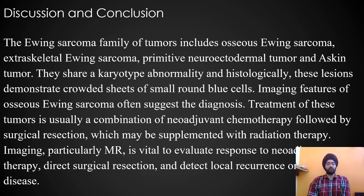In discussion and conclusion, the Ewing sarcoma family of tumors includes osseous Ewing sarcoma, extra-skeletal Ewing sarcoma, primitive neuroectodermal tumors, and Askin tumors. They share a karyotypic abnormality, and histologically these lesions demonstrate crowded sheets of small round blue cells. Imaging features of osseous Ewing sarcoma often suggest the diagnosis. Treatment is usually a combination of neoadjuvant chemotherapy followed by surgical resection, which may be supplemented with radiation therapy.